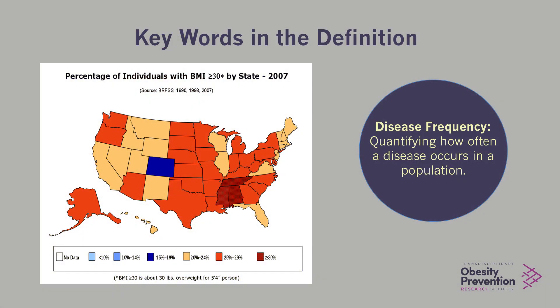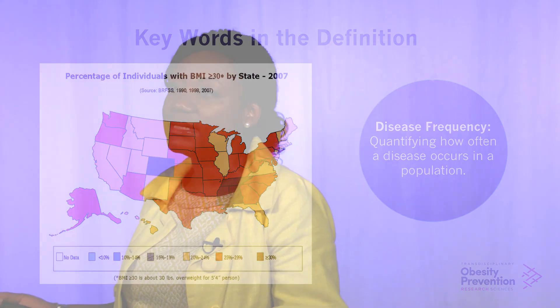Disease frequency. As an epidemiologist, we also want to quantify how much of the disease is occurring in a population. Sometimes you hear estimates of the prevalence — the prevalence of a particular disease or obesity in the U.S. is X number. That simply means what's the number of existing cases for a particular disease, and that really helps us determine whether we have a public health problem and how to allocate resources.